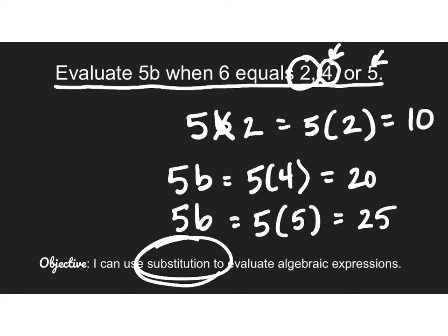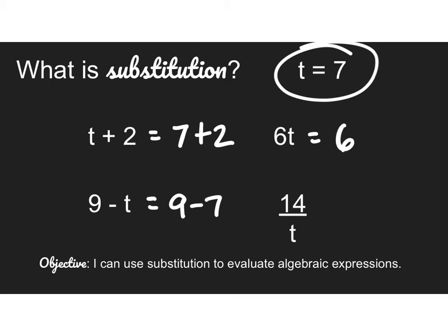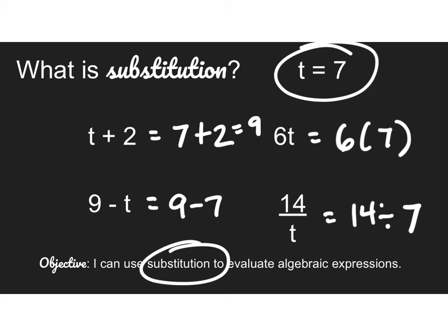So that is using substitution to find the value of an algebraic expression. We can use substitution with any operation. For example, if t is equal to 7, this expression becomes 7 plus 2. This expression becomes 9 minus 7. This expression becomes 6 times 7. And this expression becomes 14 divided by 7. All I did was substitute. And then of course, in order to find the actual value, I would complete that work and make sure to give an answer.